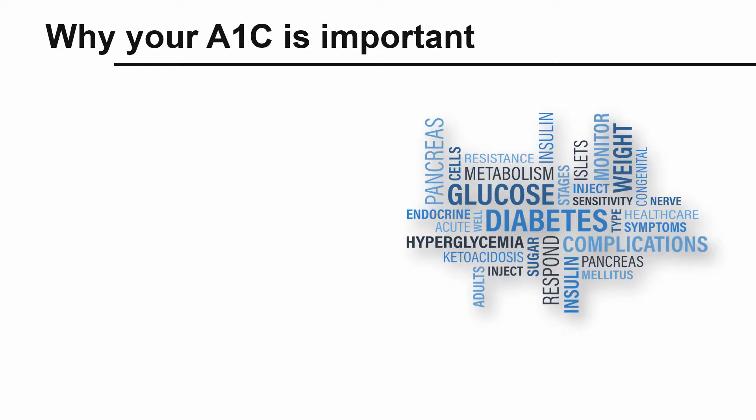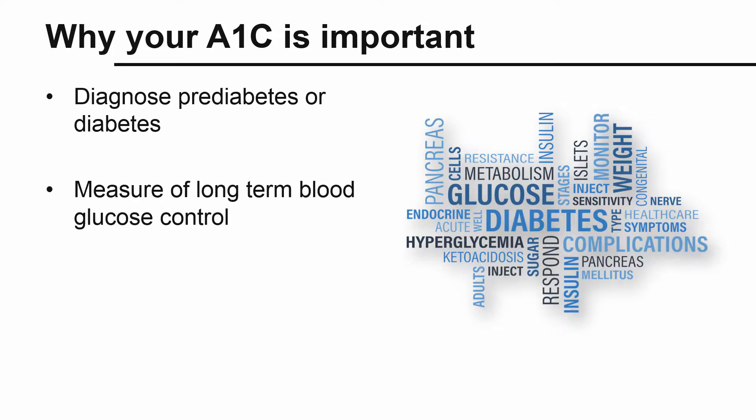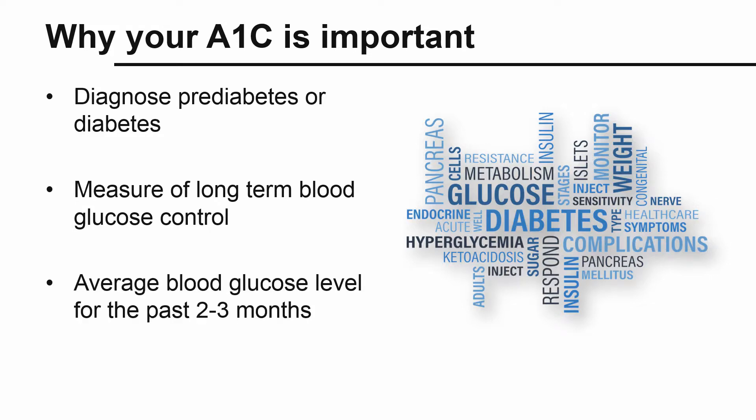A1c helps in the diagnosis of prediabetes or diabetes. Instead of a single blood glucose reading, A1c reflects long-term blood glucose control. Think of your daily blood glucose readings as a snapshot and your A1c level as a hidden camera that monitors your blood glucose 24 hours, 7 days a week. When you have your A1c tested, it tells you what your average blood glucose level was for the past two to three months prior to the test.